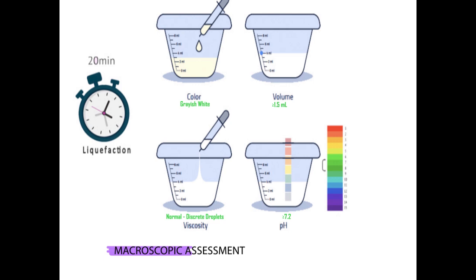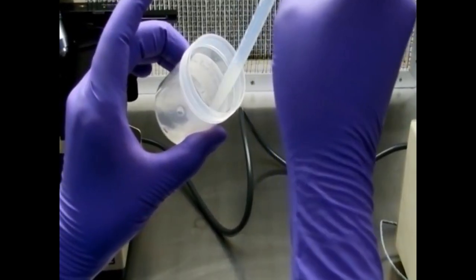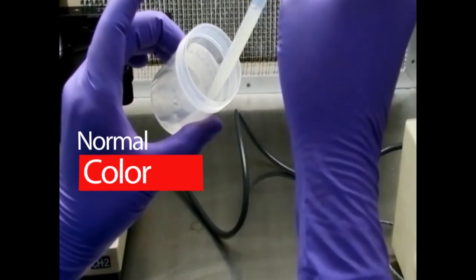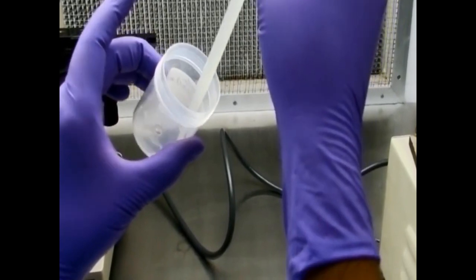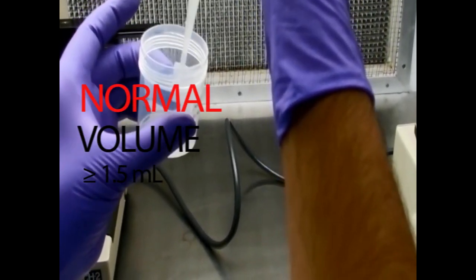The color of the semen is also noted and normally it is grayish-white and opalescent in color. The volume is also measured, which normally should be greater than 1.5 milliliters.